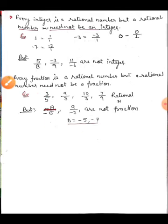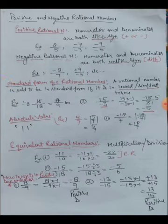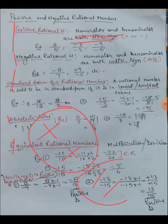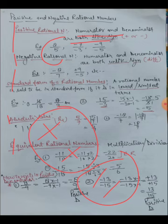Today's topics are: positive and negative rational numbers, standard form, absolute value, equivalent rational numbers, and how to write with a positive denominator. For positive and negative rational numbers, it depends on whether the signs of the numerator and denominator are like or unlike. If both numerator and denominator have the same sign — both positive or both negative — the number is a positive rational number.